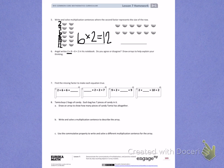I'm going to start by drawing an array for 2 times 8. This means I need 2 rows with 8 in each row.